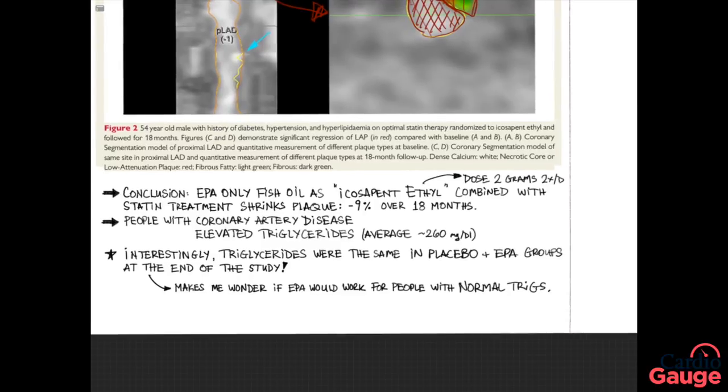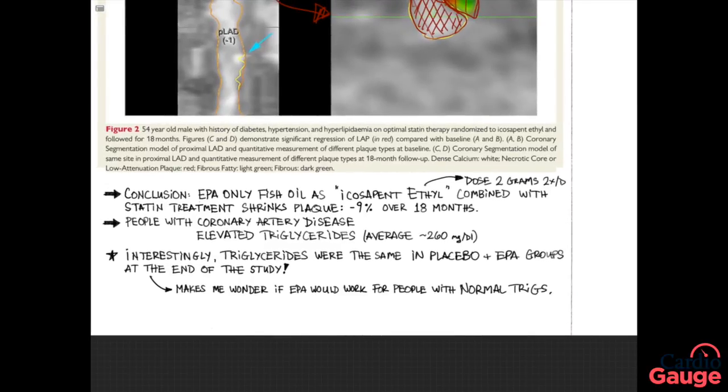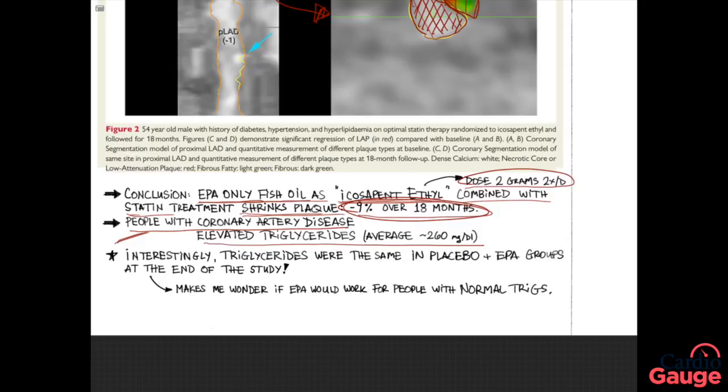The conclusions I take away from this study were that EPA-only fish oil as icosapent ethyl, which is a slightly processed fish oil, in a dose of 2 grams twice a day combined with a statin, shrinks plaque minus 9 percent over 18 months. And I consider this important that people with coronary artery disease and elevated triglycerides could benefit from this intervention.